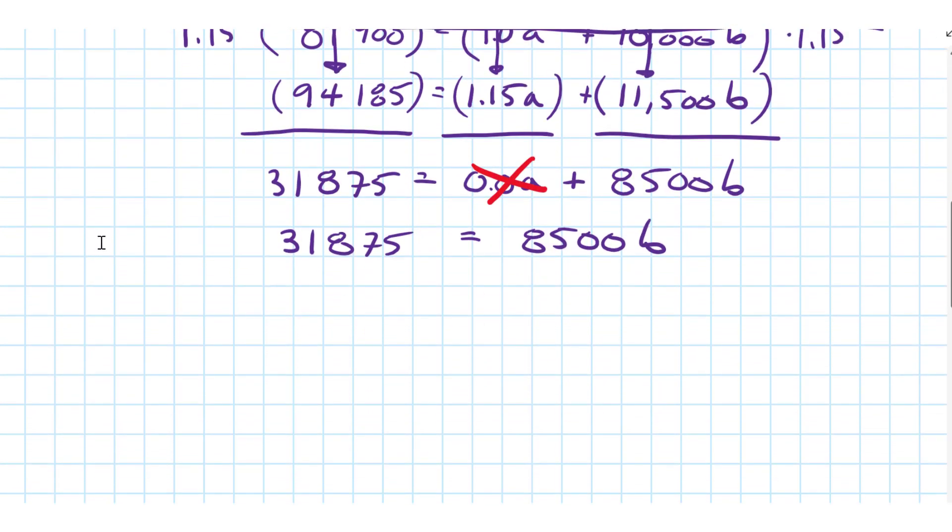The next step is some basic algebra. We need to divide both sides by 8500, so we do that and we can say that b is equal to 3.75. That's the variable cost, isn't it?